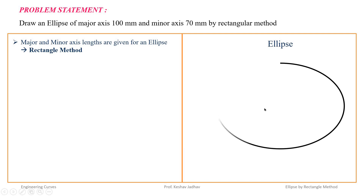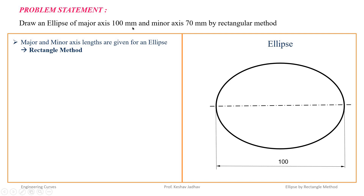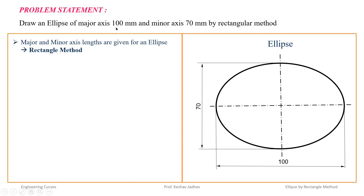Let us consider an ellipse. The longer axis is called the major axis, and in this example its length is equal to 100 mm. The other axis is called the minor axis, and in this example it is given as 70 mm. In the rectangle method, the name itself indicates we have to draw a rectangle of length equal to the major axis and width equal to the minor axis.